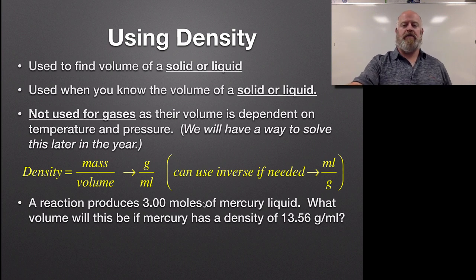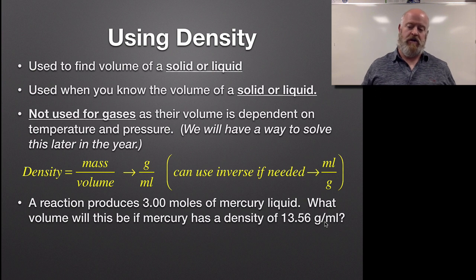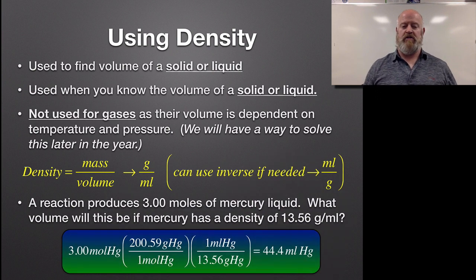So let's do a little thing here. A reaction produces 3 moles of mercury liquid. What volume would this be if mercury has a density of 13.56 grams per milliliter? So we know our moles and we know we have a density of 13.56 grams per milliliter.